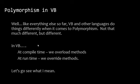Like everything else so far, VB and other languages do things differently from Python when it comes to polymorphism. In VB, at compile time we do something called overloading methods. At runtime, we override methods. In Python, we don't really overload methods — Python gives us a way of doing the same thing with more flexibility and ease. But at runtime in Python, we also override methods.